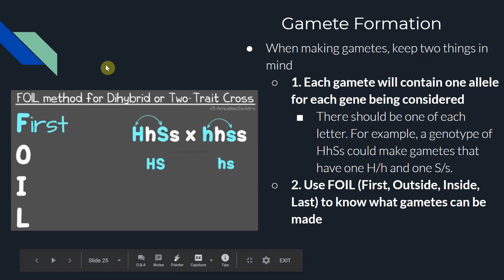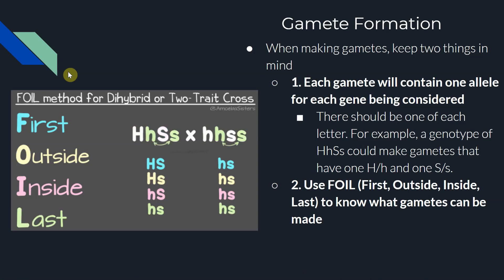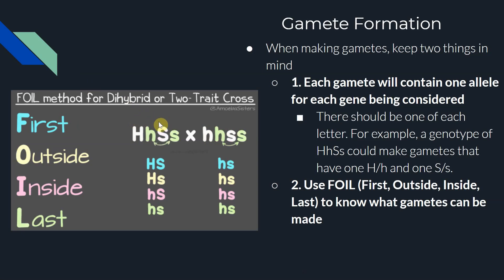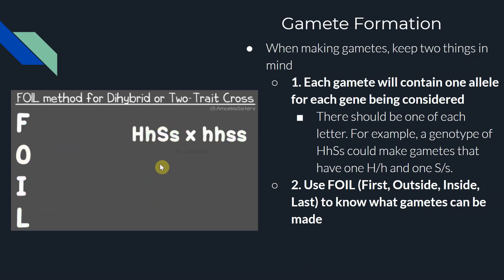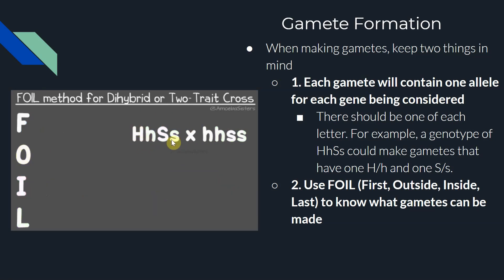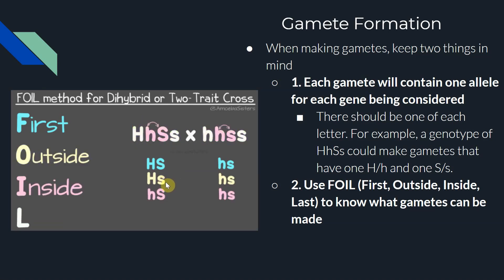There's a nice animation that will show us in motion how we can come up with different combinations of alleles to make gametes. The F in FOIL stands for First — we take the first letter in each pair. So that is big H and big S, and when we put those together we make the first gamete: big H, big S. The O step considers the outside letters of the whole group — big H and little s — giving us a second gamete: big H, little s.